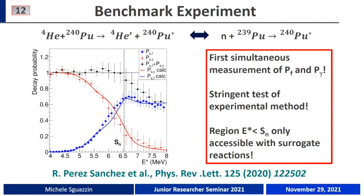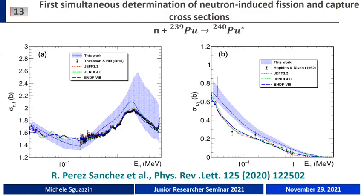Going back to the work: what Ricardo and collaborators did was to use the statistical model implemented in TALYS, leaving some key parameters free in order to reproduce the measured decay probabilities. The calculated probabilities, shown with red and blue lines, are in good agreement with the measured ones. With these parameters constrained, it was possible to infer the neutron-induced reaction cross-sections of plutonium-239.